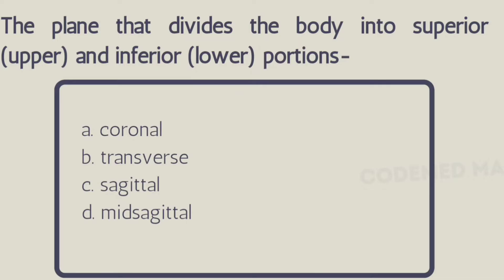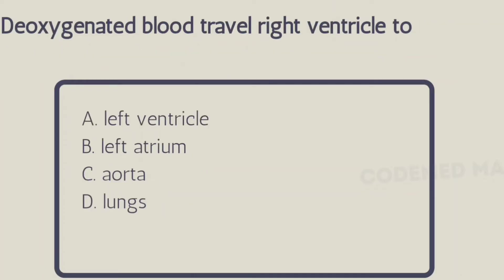Next question: the plane that divides the body into superior (upper) and inferior (lower) portions is — Option A: coronal, Option B: transverse, Option C: sagittal, Option D: midsagittal. The right answer is Option B, transverse. The transverse plane is also known as the horizontal plane; it divides the body into upper and lower portions.